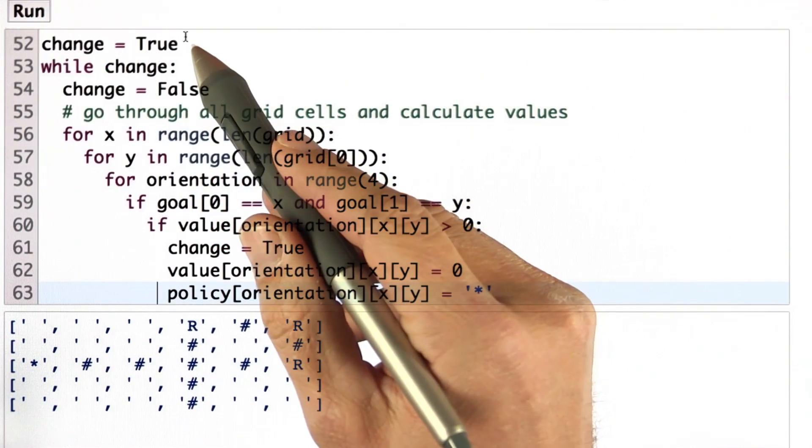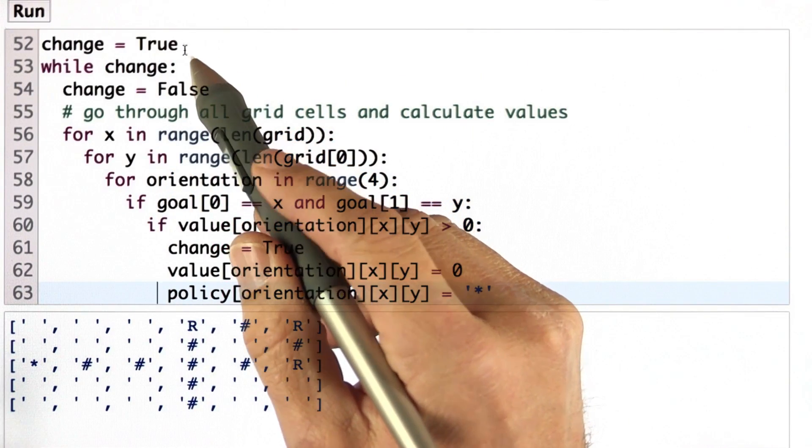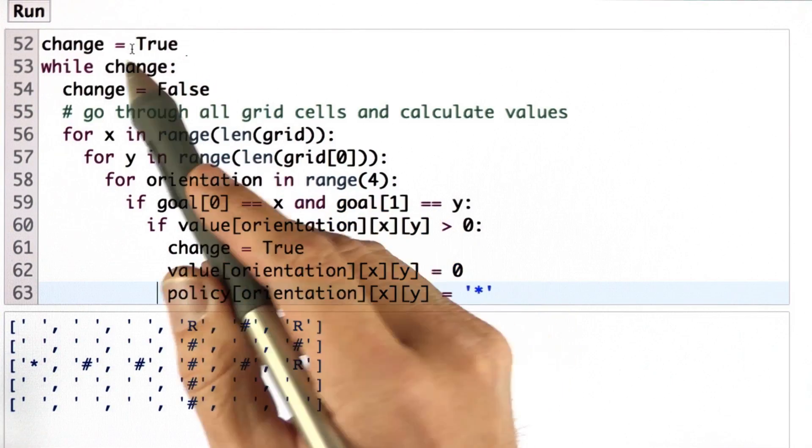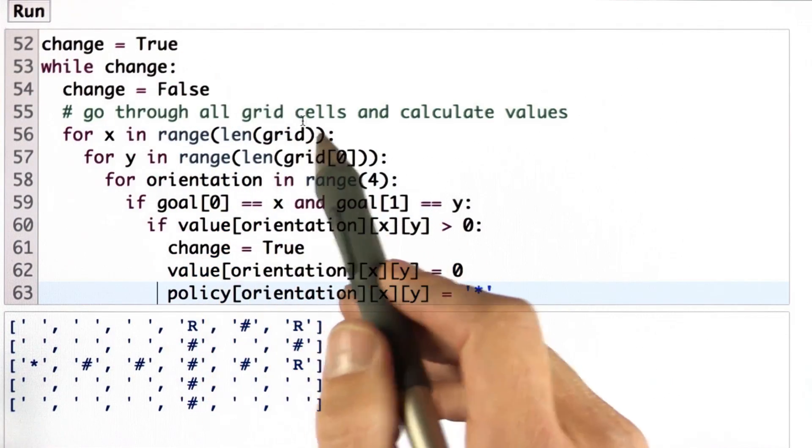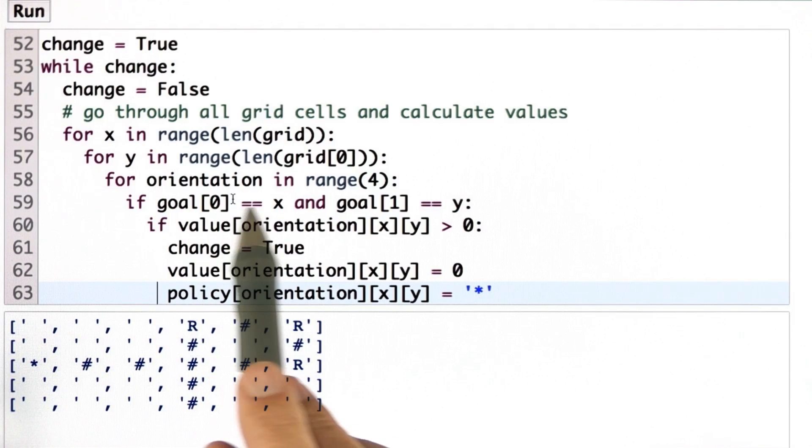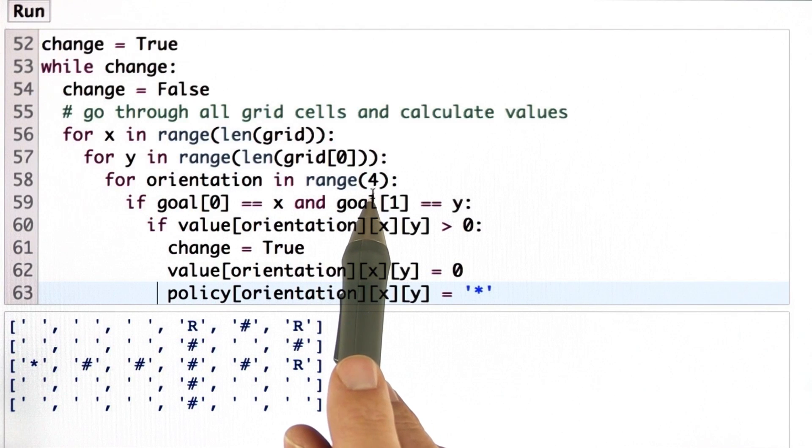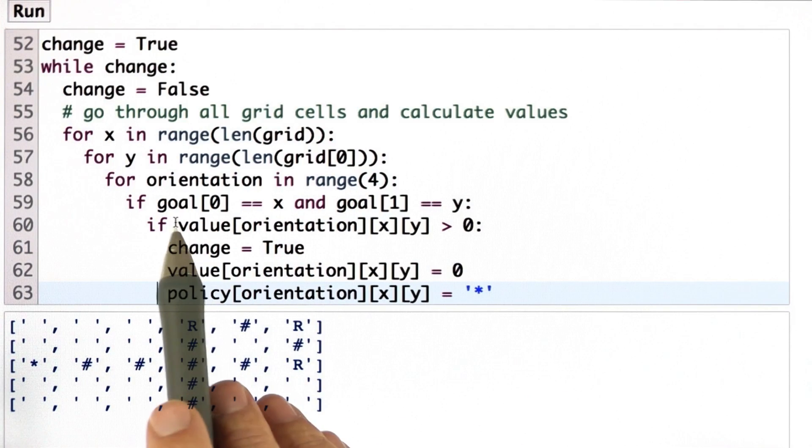Scrolling down, my update function is exactly the same as before for dynamic programming. While change exists, go through all x, y's and all orientations, of which there are four. So it's now a deeper loop.